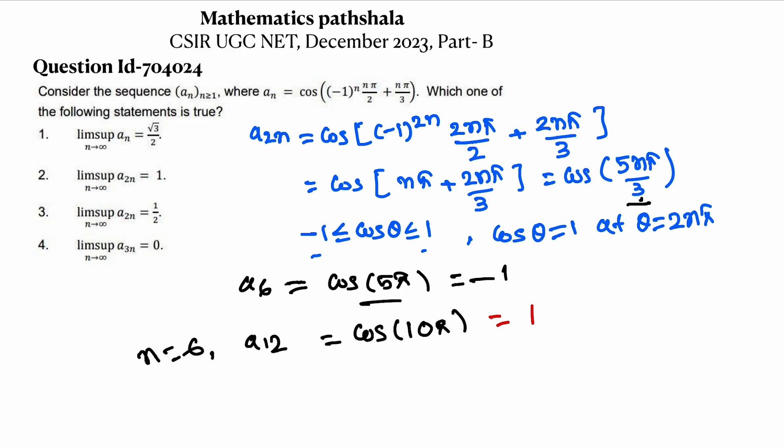So we know that maximum value of cos θ is 1. So sup of a_2n equals 1. That is limit sup because it is constant. So limit sup of a_2n becomes 1.